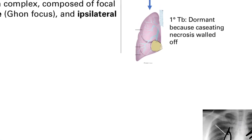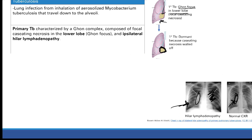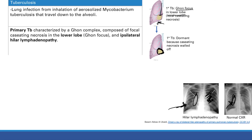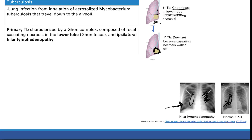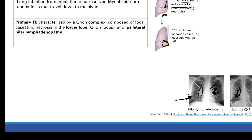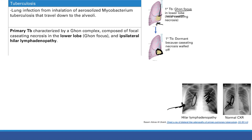The Ghon focus gets walled off by our body's immune defenses, and now you have dormant primary TB. The TB is still in your lungs — you'll still get a positive PPD test — but you're going to have minimal to no symptoms because it's walled off and dormant.